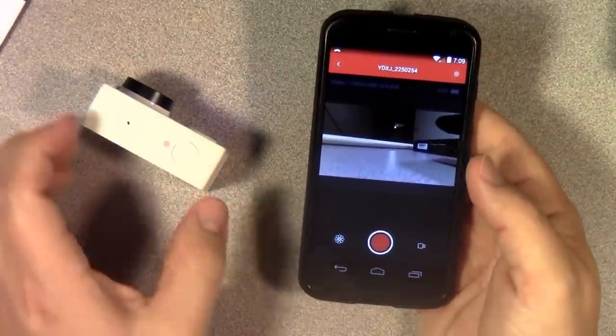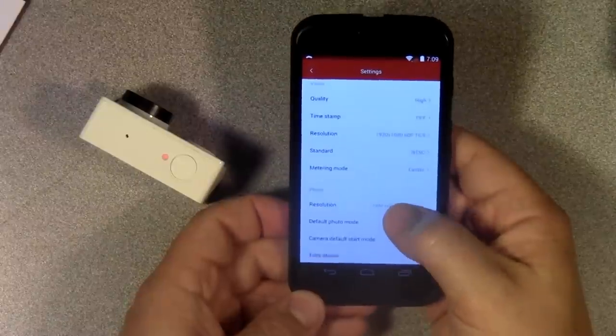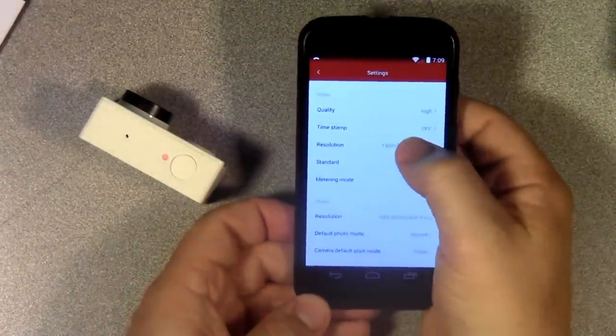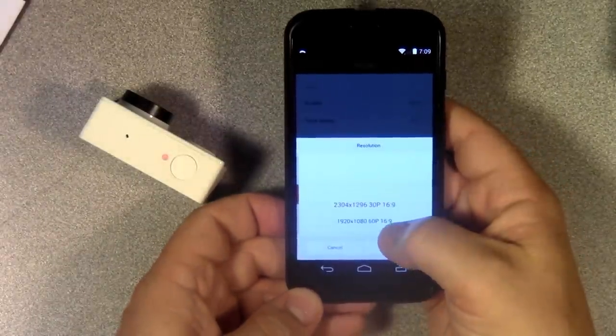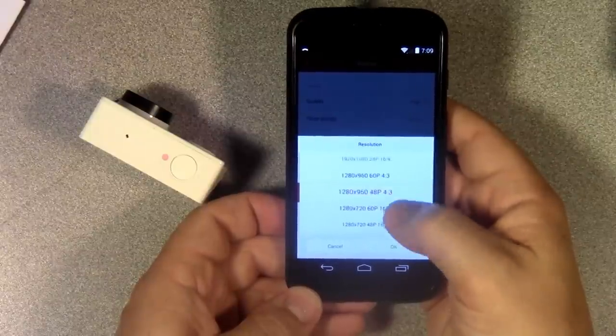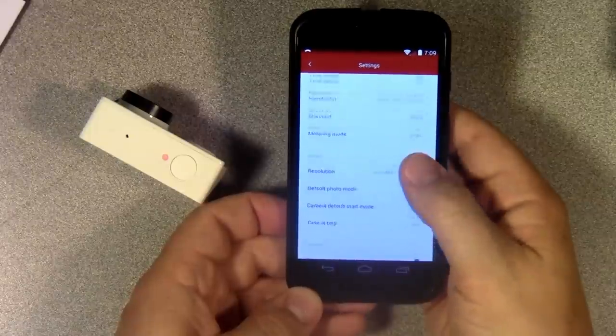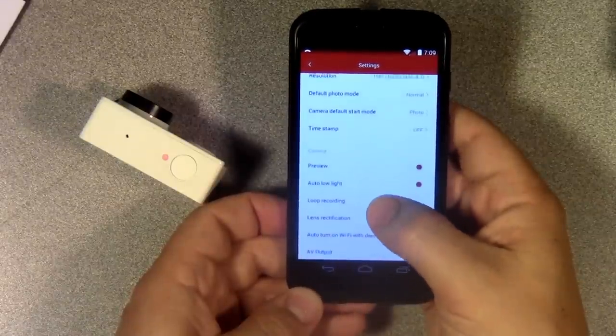You can also change settings, such as turn on and off lens rectification, change the video mode, frame rate, things like that. You can also specify that you'd like to start it in video mode instead of photo mode when you start it up, and numerous other settings as well. So that camera app is very much indispensable if you're going to be using this camera.